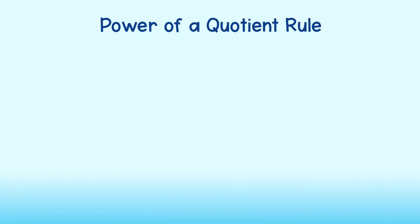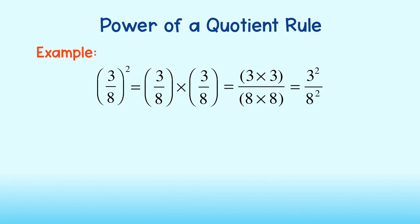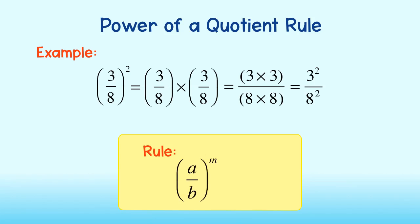The next rule we will cover is the power of a quotient rule. We can apply this rule when there is a division problem raised to some power. Using what we know about exponents, we can write this as 3 eighths times 3 eighths. We know that when we multiply two fractions, we multiply the numerators and the denominators. We can rewrite this as 3 to the second over 8 to the second. Notice the exponent has just been applied to both the 3 and the 8. Therefore, our rule for the power of a quotient is to simply apply the power to both numerator and denominator.